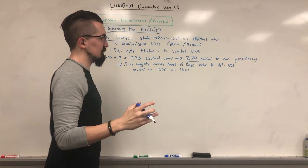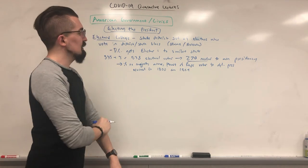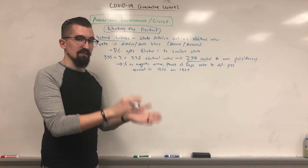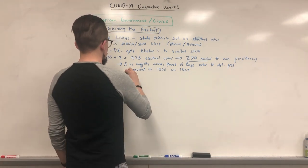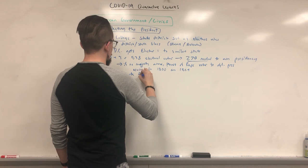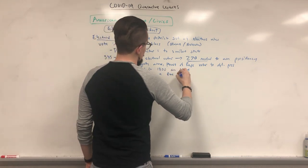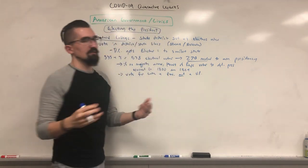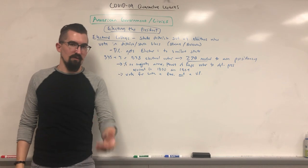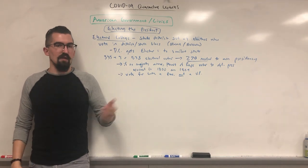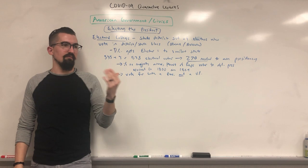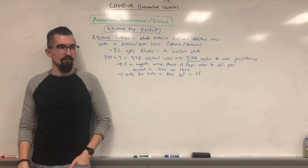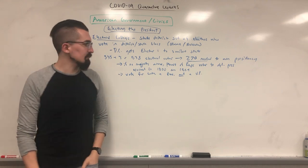Not only do electors vote for the president, but they also vote for the vice president. Initially, the vice president was simply the runner-up, but now you vote for a president and a vice president separately. What presidents do nowadays is choose a running mate for vice president, so if you vote for the presidential candidate, you're almost certainly also voting for their vice presidential candidate.